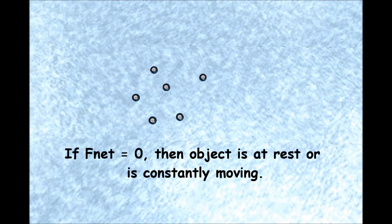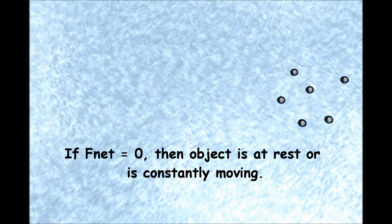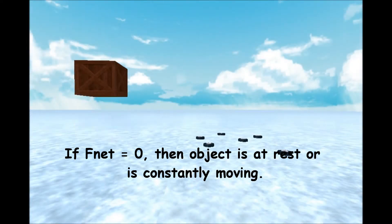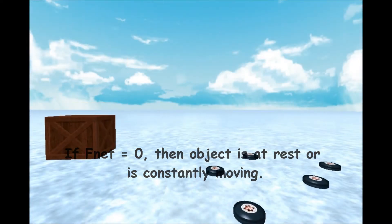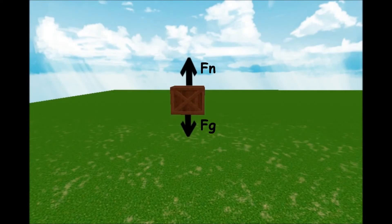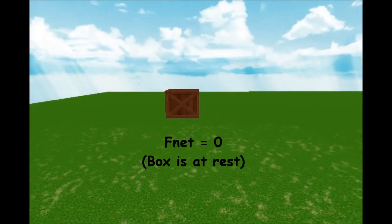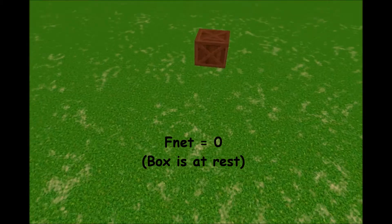The law states that if the net external force on an object is zero, the object will remain at rest or continue to move at a constant velocity. This box is at rest. Its force of gravity is equal to the normal force, and therefore has a net force of zero and has a balanced force.